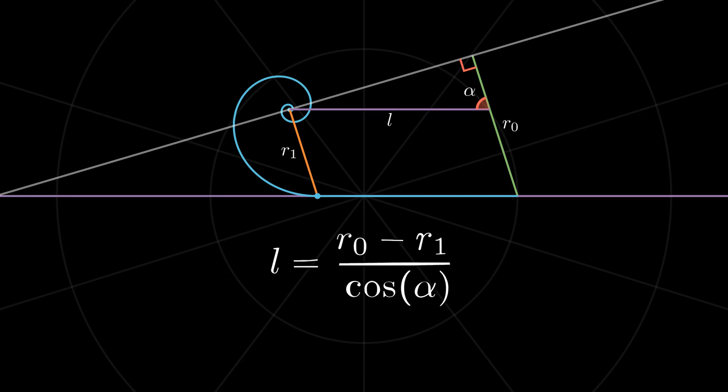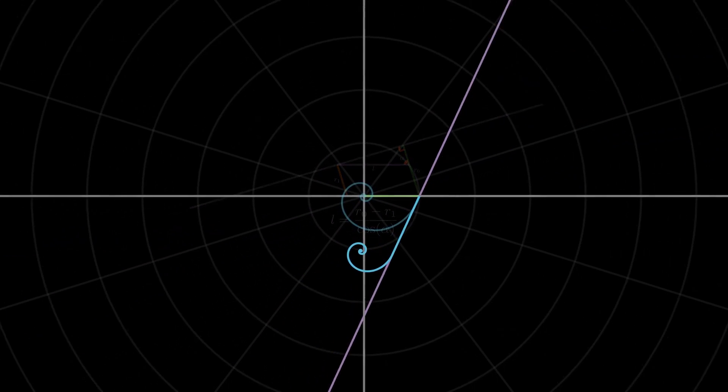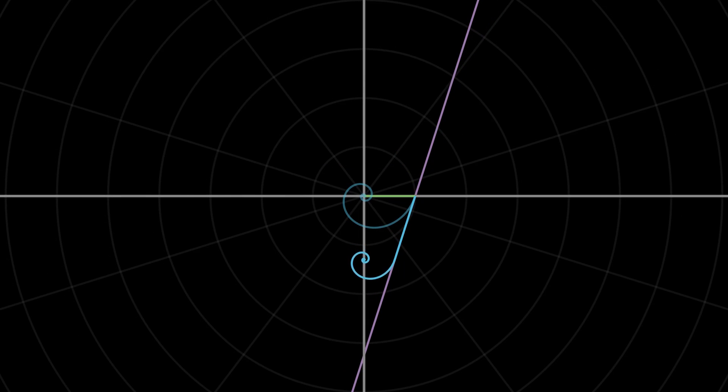In the special case where the second point is at the origin, the total length of the spiral becomes the length of the radial line divided by the cosine of the angle.